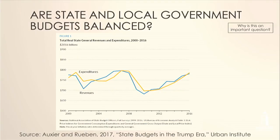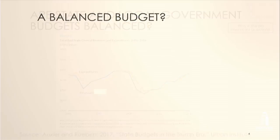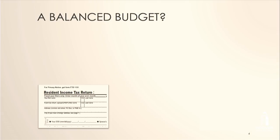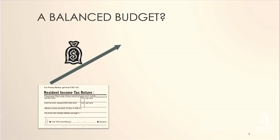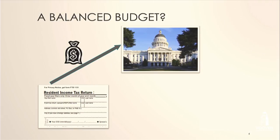Let's dig into what exactly a balanced budget is. Here's a simple model of a government. The government levies taxes — say, an income tax — and those taxes go into a pool of money directed to the state authorities. That picture is of the capital building in Sacramento, the capital of California.